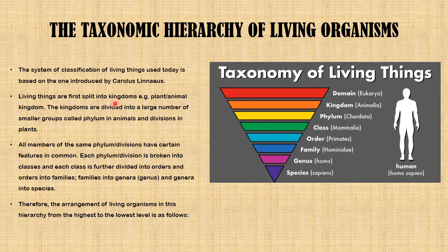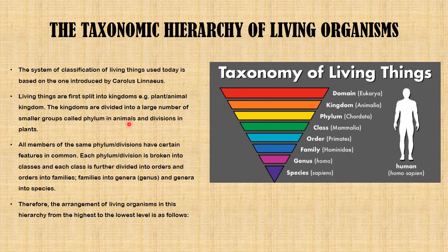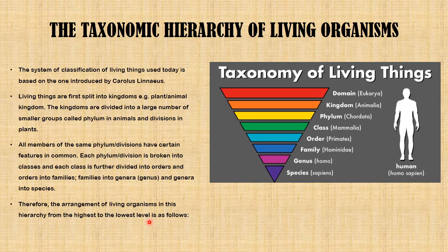Living things are first split into kingdoms — plant or animal kingdom, monera, fungi, and protists. The kingdoms are divided into a large number of smaller groups called phylum in animals and division in plants. All members of the same phylum or division share certain features. Each phylum or division is broken into classes, classes into orders, orders into families, families into genera, and genera into species.